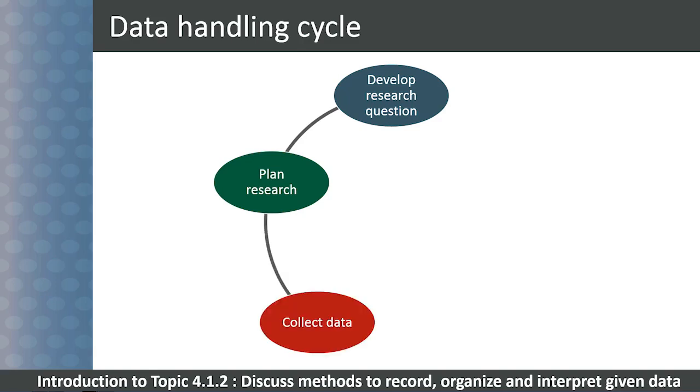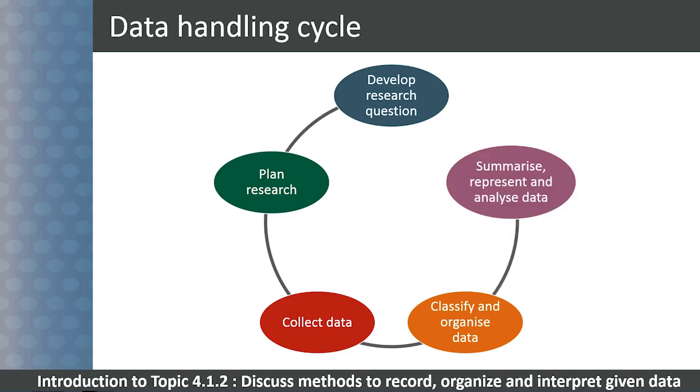Data is collected using appropriate instruments such as questionnaires, direct observation and so on. The raw data is processed by grouping it and organizing it. Then the final step is to summarize, represent and analyze the data. The cycle begins again as new research questions arise.